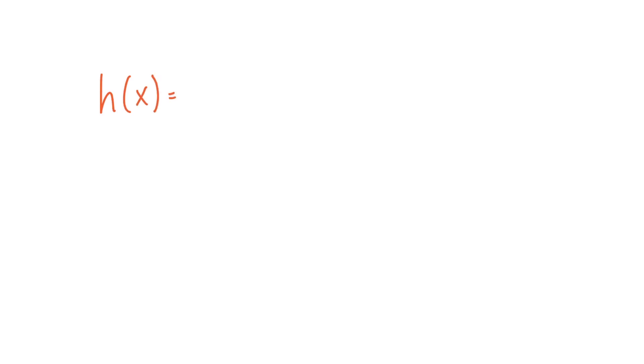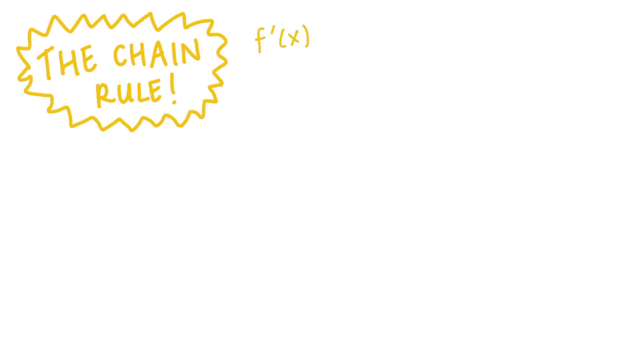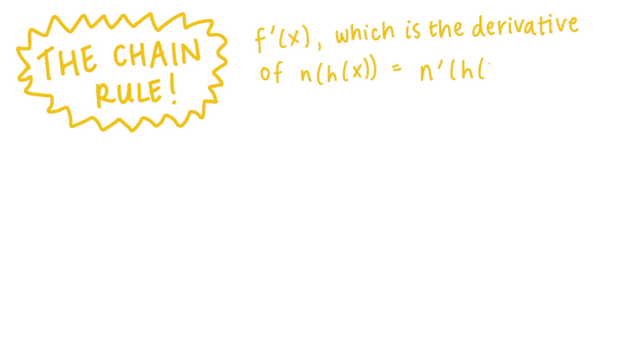Finding the derivatives of simple functions like these is pretty straightforward, but what about more complicated functions? We can use the chain rule, which is basically a formula that allows us to calculate the derivative of composite functions — functions within other functions. For example, let's say you have a function h(x) = 2x + 3, another function n(x) = x squared, and the composite function f(x) = n(h(x)). The chain rule states that the derivative of n(h(x)), written as f prime of x, can be calculated by finding the derivative of n(x) at h(x) and then multiplying that by the derivative of the inner function h(x).